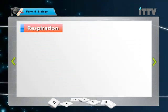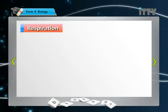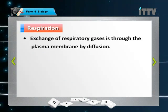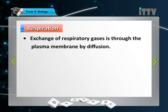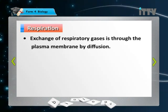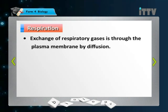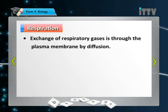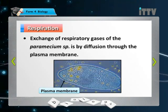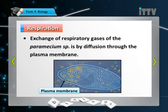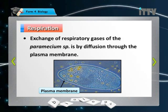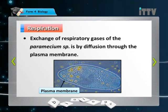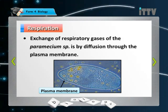Let's see how Paramecium carries out respiration. Respiration in Paramecium involves the exchange of respiratory gases — for example, carbon dioxide and oxygen. This occurs directly through the plasma membrane through a process called diffusion.